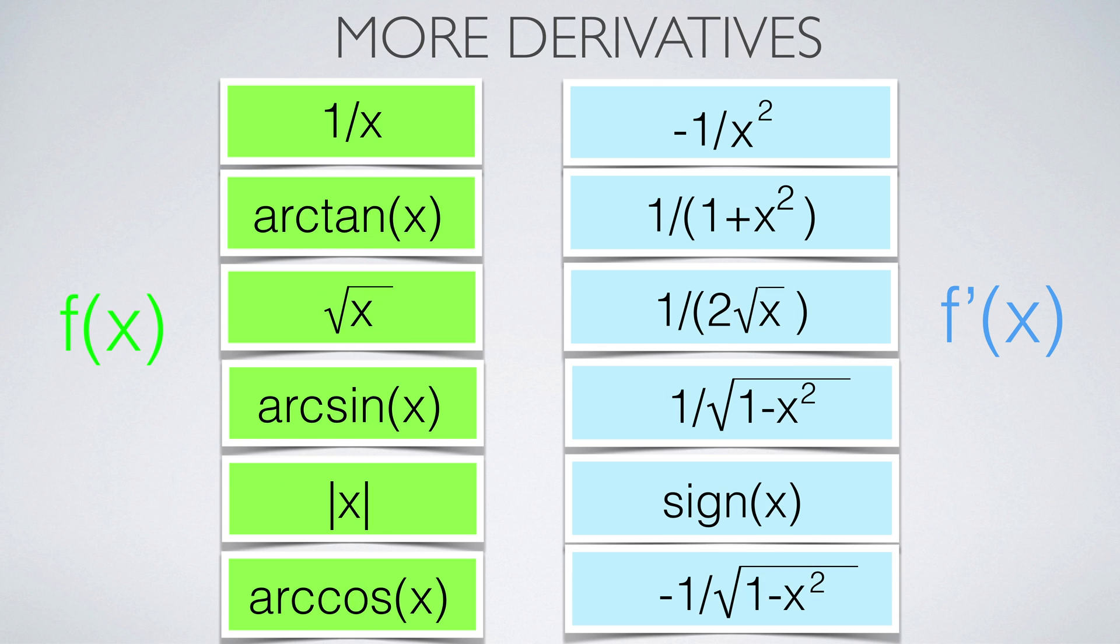Here are some more derivatives which are good to know. The sign function is the function which is 1 for positive x, and -1 for negative x, and 0 for 0. The derivative of the absolute value is not defined at x equals 0. Its derivative has a jump discontinuity.